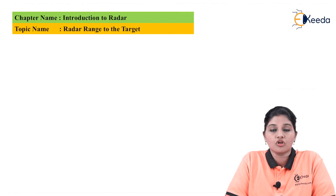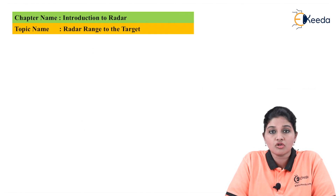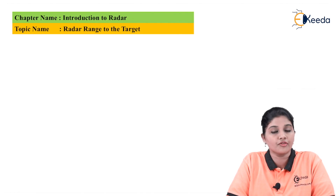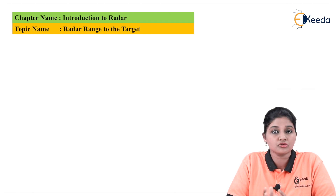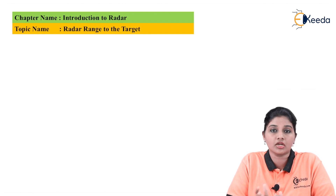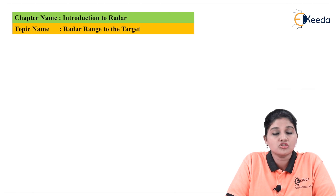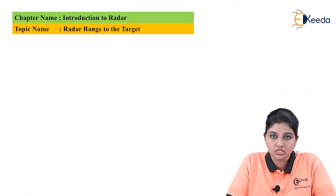The simple calculation for finding the range or distance of an object from the radar uses the time taken by the signal to travel from the transmitter to the target and back from the target to the receiving antenna. The calculation also includes the speed of propagation of the signal.